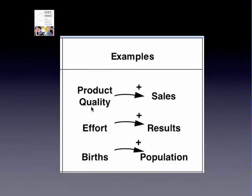Let's see some of his examples. If we increase product quality, we increase the sales. If we increase efforts, we increase the results. If we increase the birth, we increase the population.